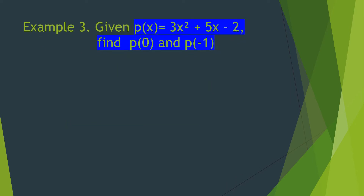We go to example number 3. We have the function p of x is equal to 3x squared plus 5x minus 2. This time, we are going to find the value of that function using 0 and using negative 1. We are going to substitute the value of x.